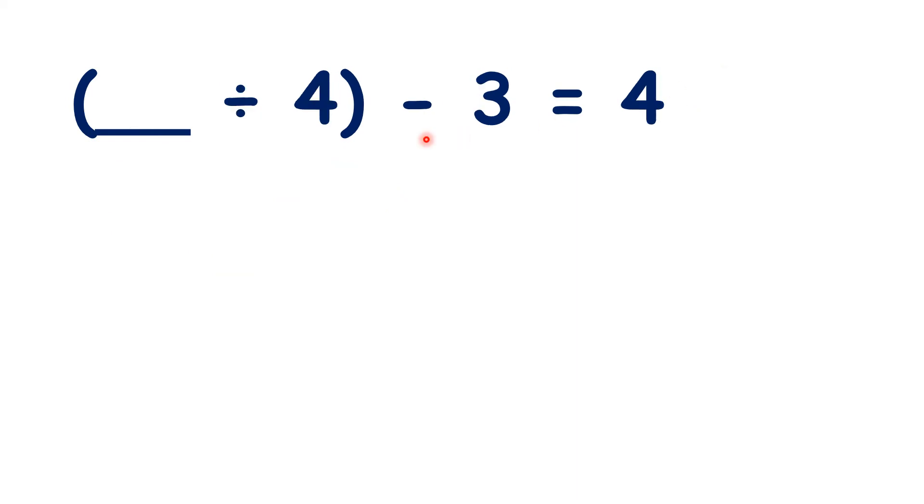Now, pause the video and solve something divided by four minus three equals four. Well, they subtracted, so we'll start at the end and do the opposite. We can add four and three to make seven. And then, because they divided, we can multiply seven by four to get our missing number, 28. 28 divided by four is seven, and seven minus three is four.